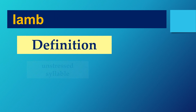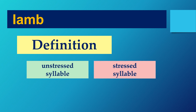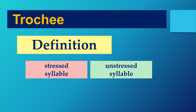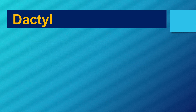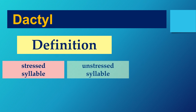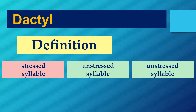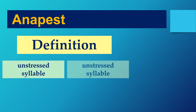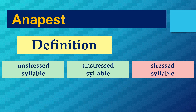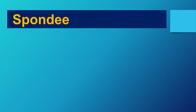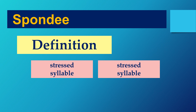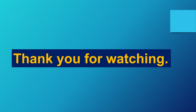Let's review quickly. What is an iamb? It's an unstressed syllable followed by a stressed syllable. A trochee is a stressed syllable and then an unstressed syllable — stress, unstressed. A dactyl is a stressed syllable and then two unstressed syllables — stressed, unstressed, unstressed. An anapest is an unstressed syllable, unstressed syllable, then a stressed syllable — the anapest is the opposite or inverse of the dactyl. A spondee is two stressed syllables right in a row, like Mark Twain, Dunn Field, Park Place. Thanks for watching!